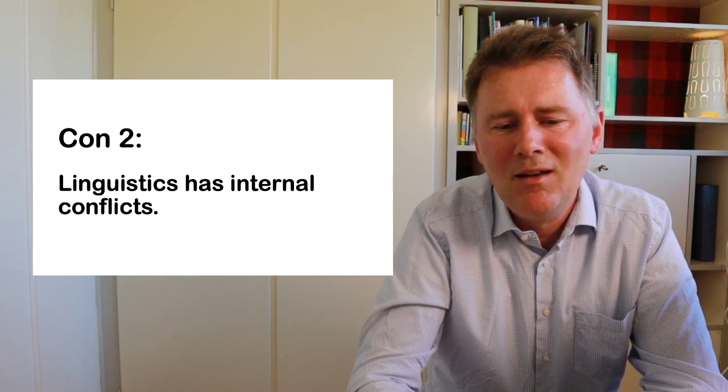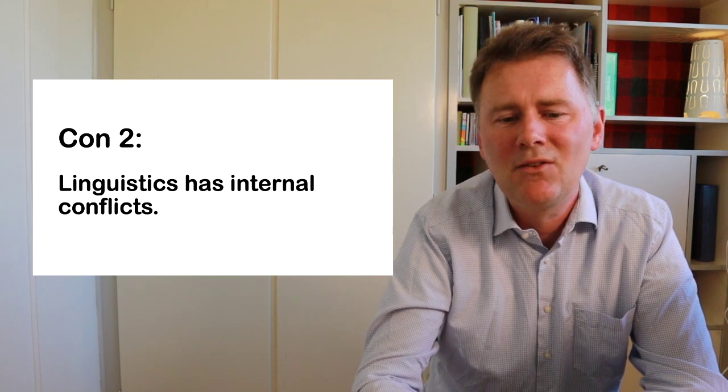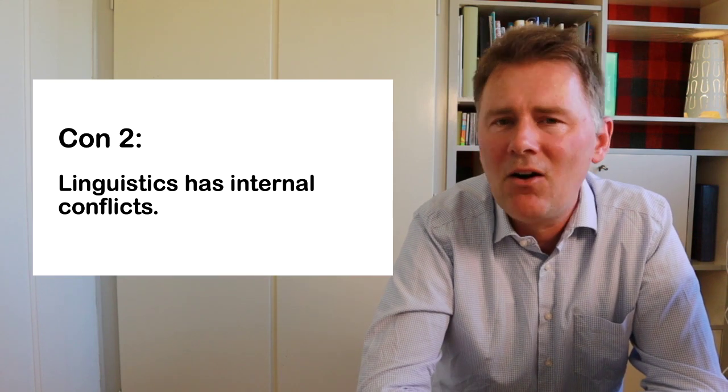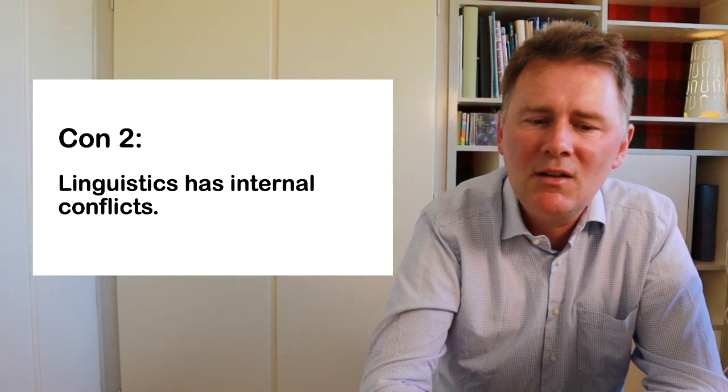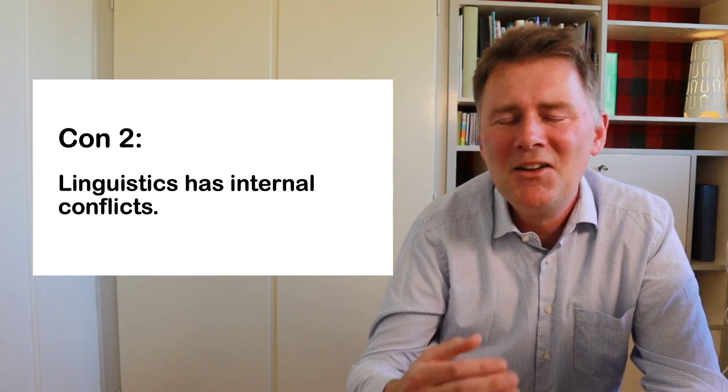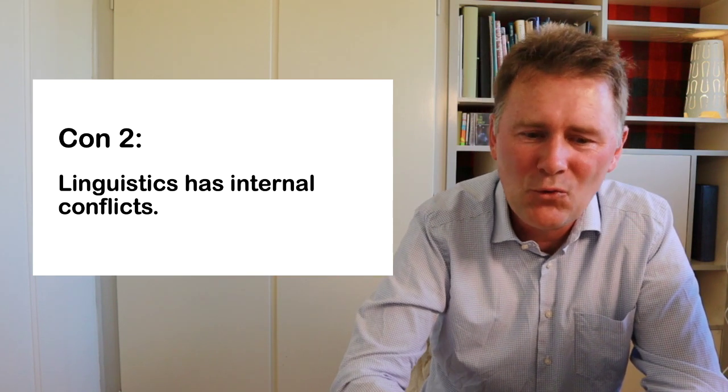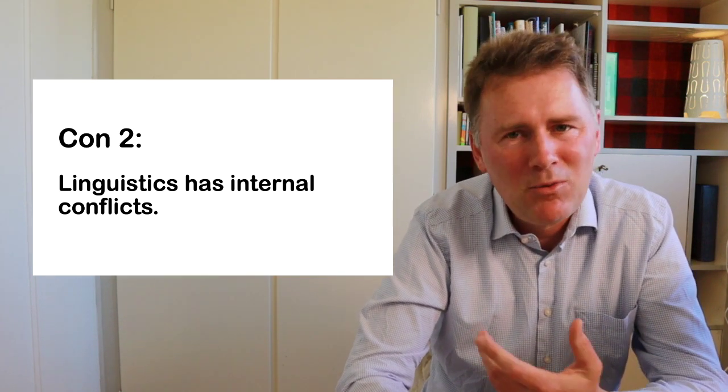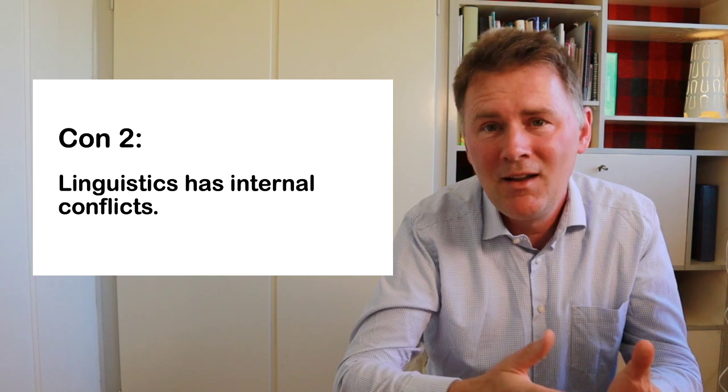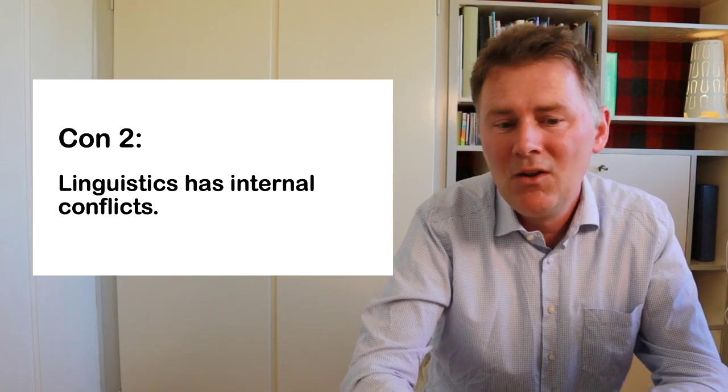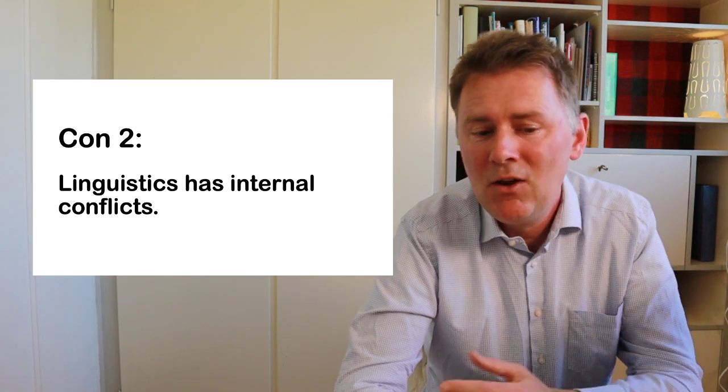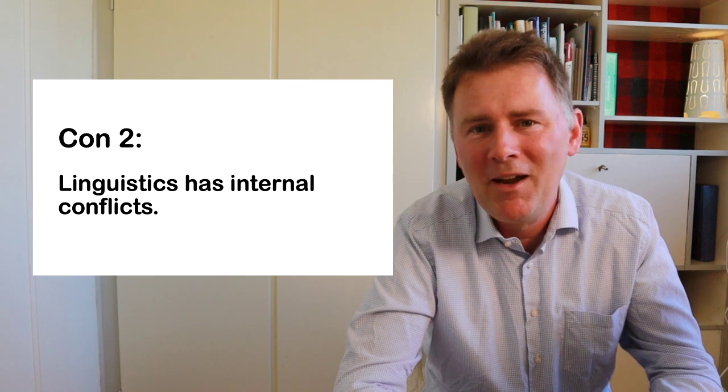Reason number two. Linguistics has internal conflicts. So, one thing that you're going to find out when you study linguistics is that there are very different ways of doing it. So much so that there are conflicts between different schools of linguistics that are trying to discredit whatever it is that the other group is doing. For example, there's a major divide in linguistics between what is called formal linguistics on the one hand and functional linguistics on the other. So, what could happen is that you end up with a professor of linguistics who's convinced that there's only one correct way of doing things.